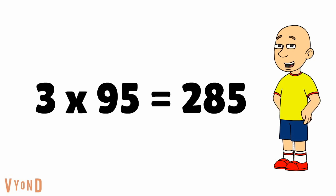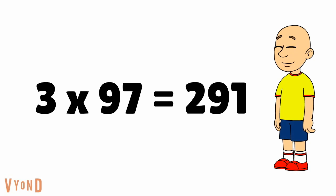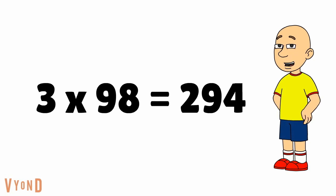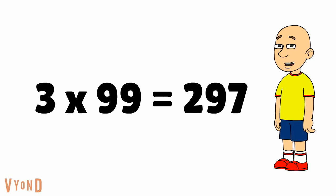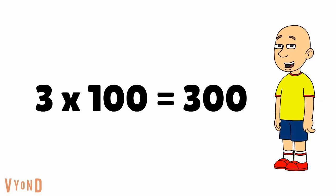3 times 95 equals 285. 3 times 96 equals 288. 3 times 97 equals 291. 3 times 98 equals 294. 3 times 99 equals 297. And 3 times 100 equals 300. Okay, those are all the 3 times tables between 1 and 100.